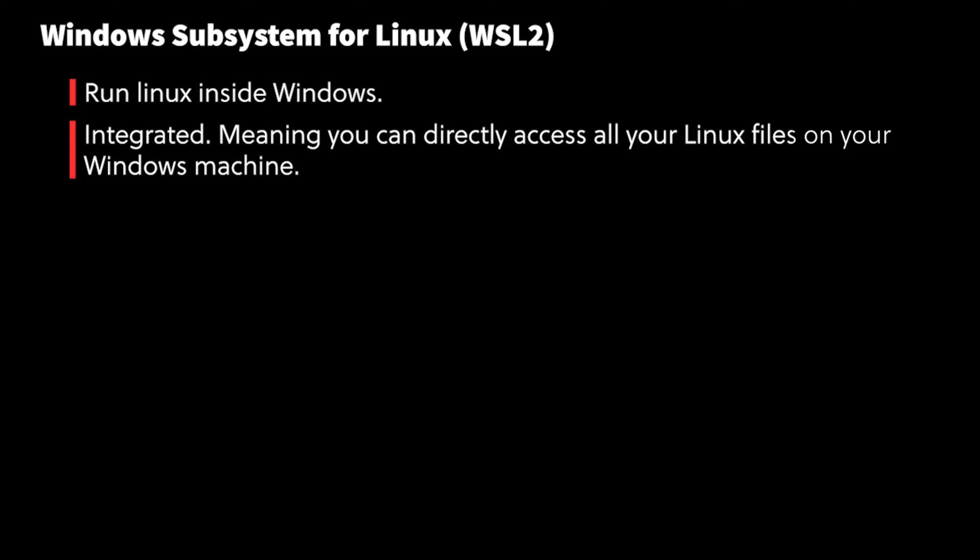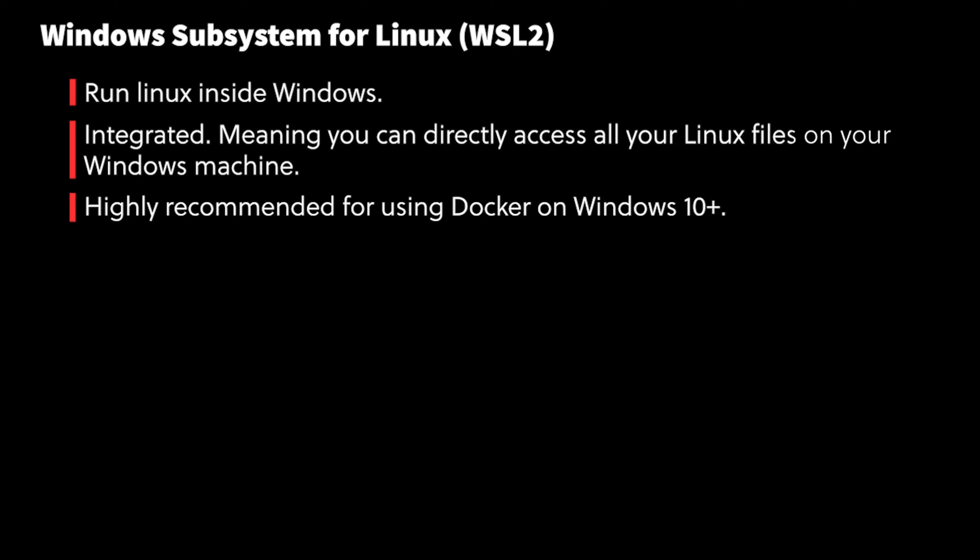The Windows Subsystem for Linux (WSL) lets you run a Linux environment directly on Windows without needing virtual machines or a dual-boot setup. It's faster, consumes fewer resources than a VM, and is integrated so you can directly access all your Windows files. If you're planning to run Docker on Windows, it's highly recommended that you use WSL2 as your Docker Desktop backend.